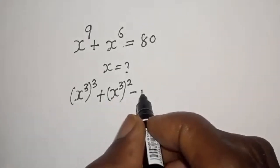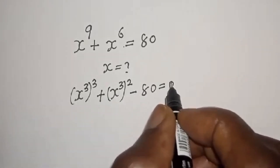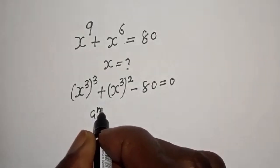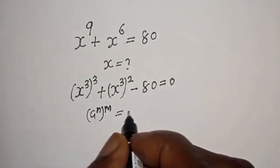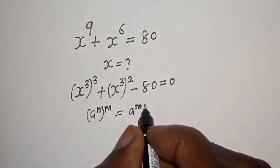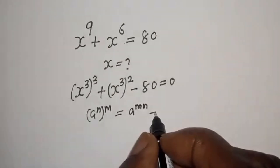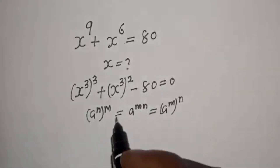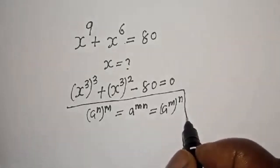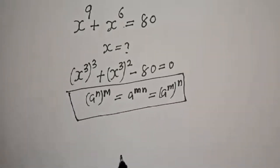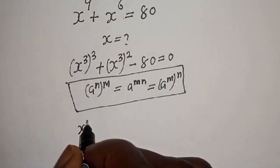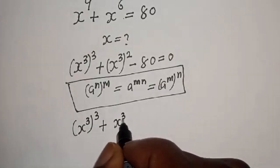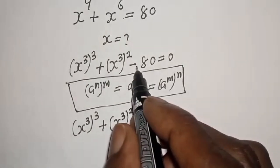If you bring 80 to this side it becomes minus 80, equal to zero. That is from the rule: a raised to power n to the power of m is equal to a raised to power m times n, which is equal to a raised to power m to the power of n. So s raised to power 3 to the power of 3, plus s raised to power 3 squared, minus 80 is equal to zero.